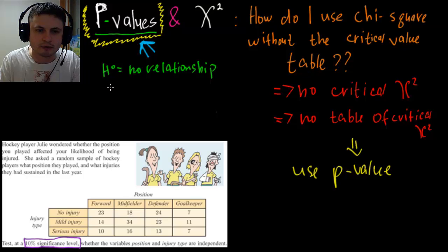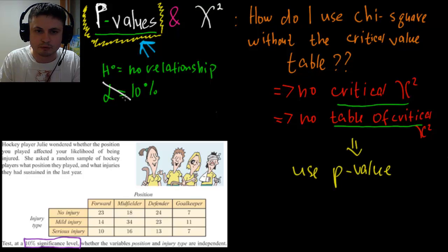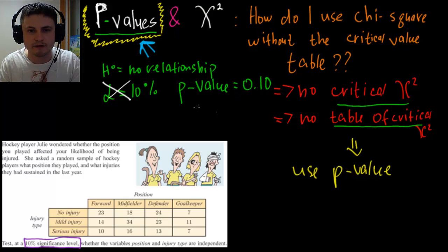So basically normally we would say this is alpha of 10%. But here because we don't actually have the critical value table, there's no value of critical chi-square anywhere. We need to change this. And this is where basically we change this to a p-value. So what we're going to say is our p-value is 0.1. So this is 10%. Basically p-value is probability value.